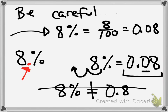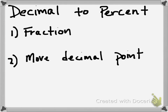Single-digit percents — 1%, 2%, 3%, 4%, 5%, 6%, 7%, 8%, 9% — those are all a little tricky. If we need to convert in the other direction and want to convert from a decimal to a percent, we're going to use the same methods: one is the fraction method, and two is to move the decimal point. Let's take a closer look at those.